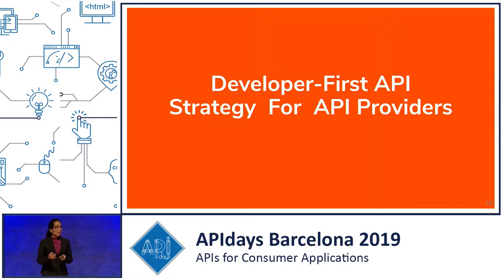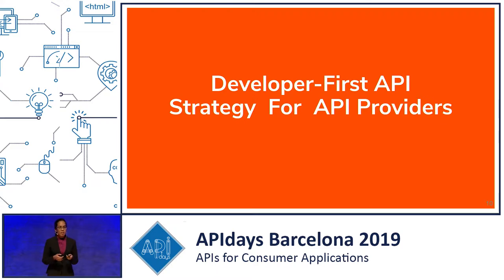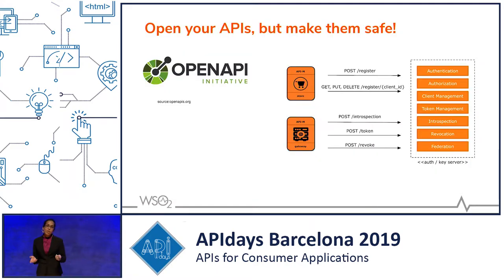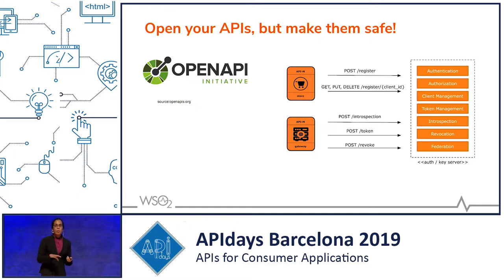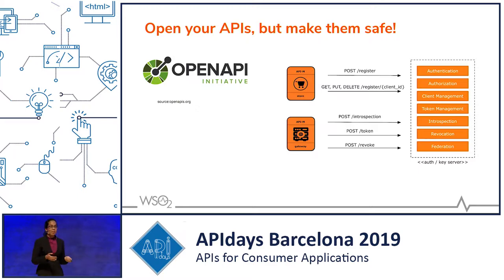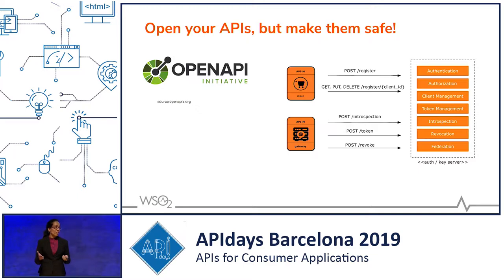Let's go ahead and see some typical API strategies for both user groups. First, consider the API providers. If you decide to open up your APIs, open them in a standard manner, like an OpenAPI specification. And whether you open up your APIs or not, you have to secure them as much as possible — with proper authentication, whether it's mutual SSL, basic authentication, or OAuth tokens.